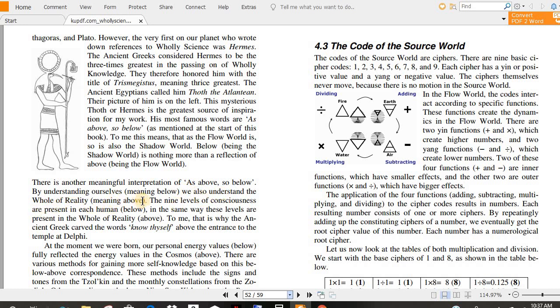There is another meaningful interpretation of as above, so below. By understanding ourselves, meaning below, we also understand the whole of reality, meaning above. The nine levels of consciousness are present in each human below, in the same way these levels are present in the whole of reality, above.